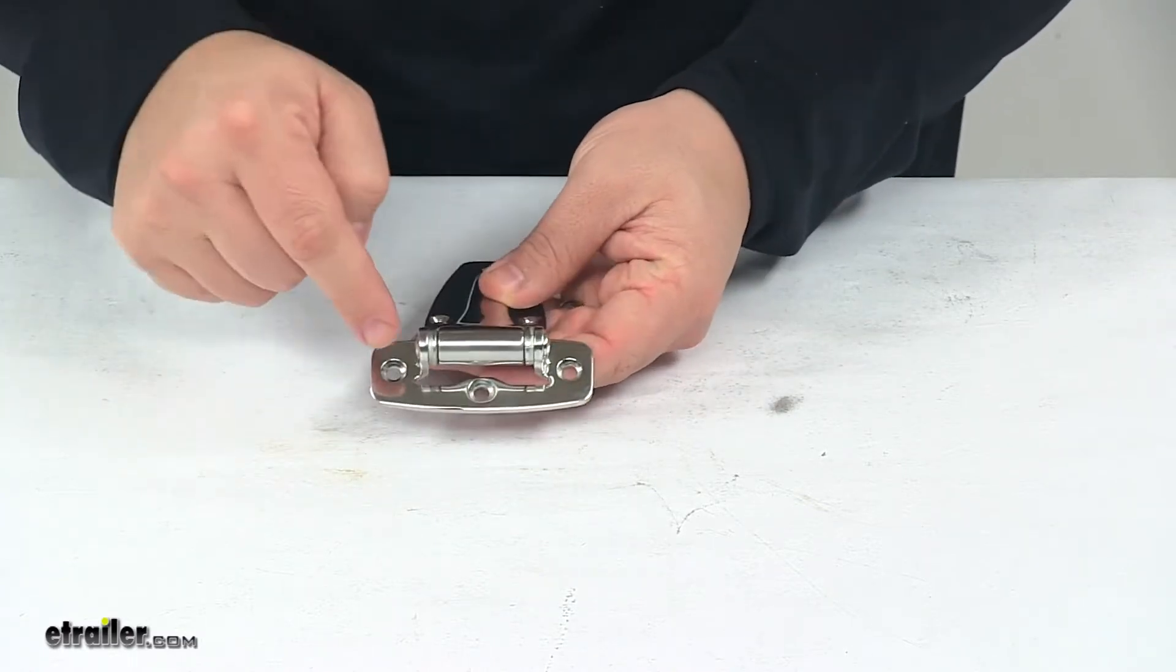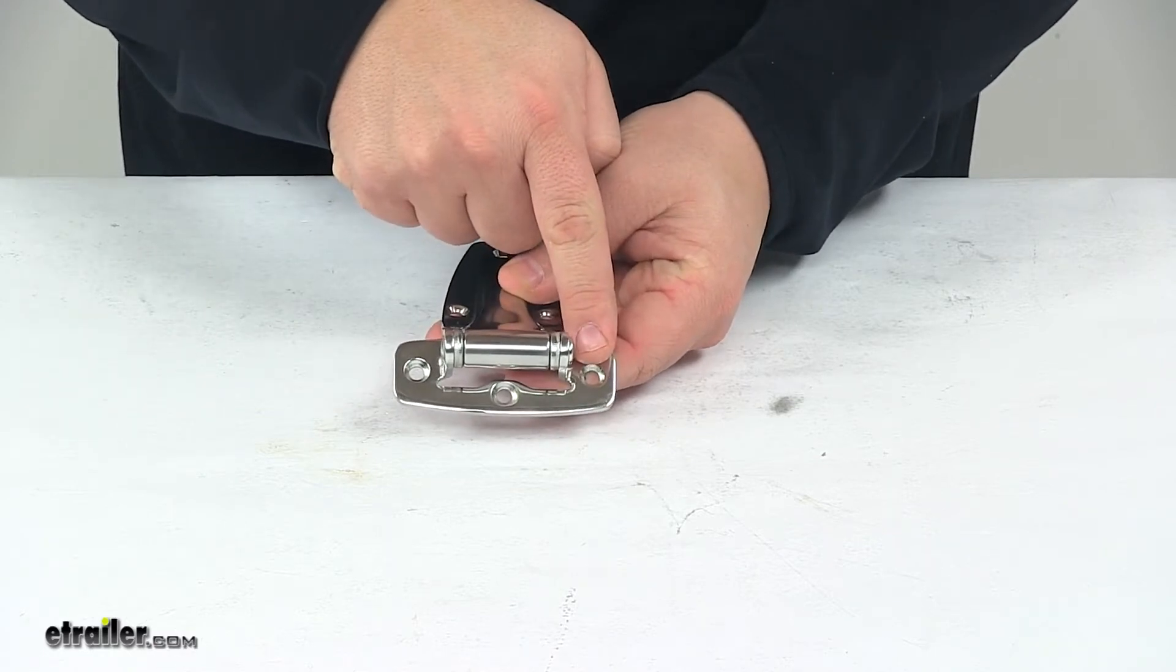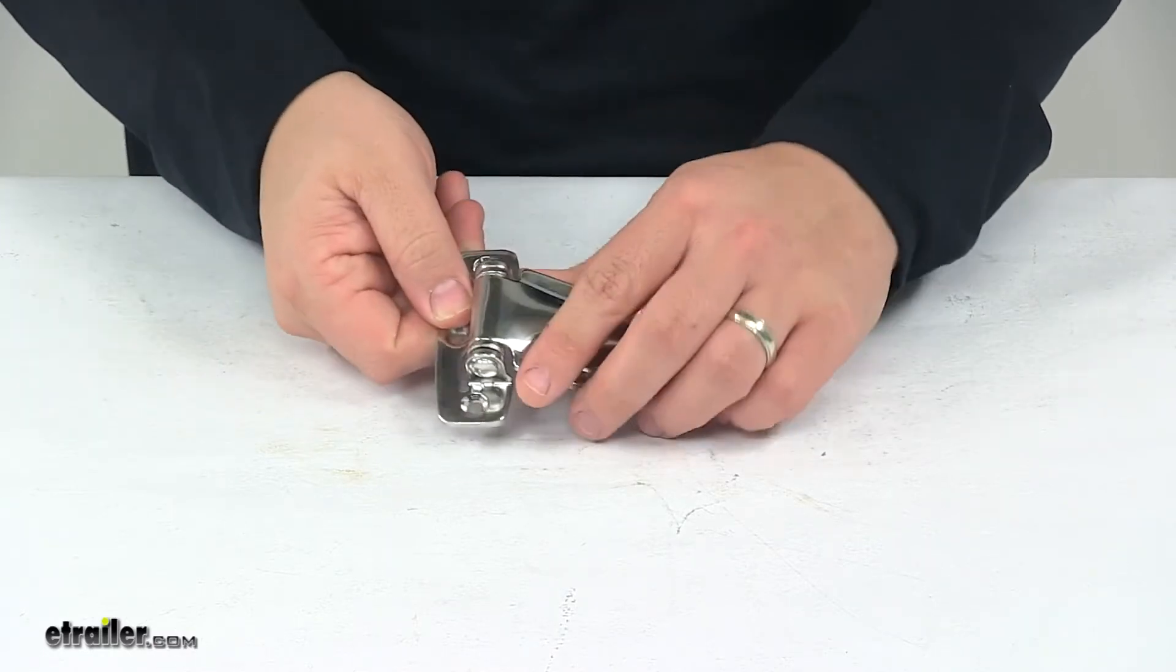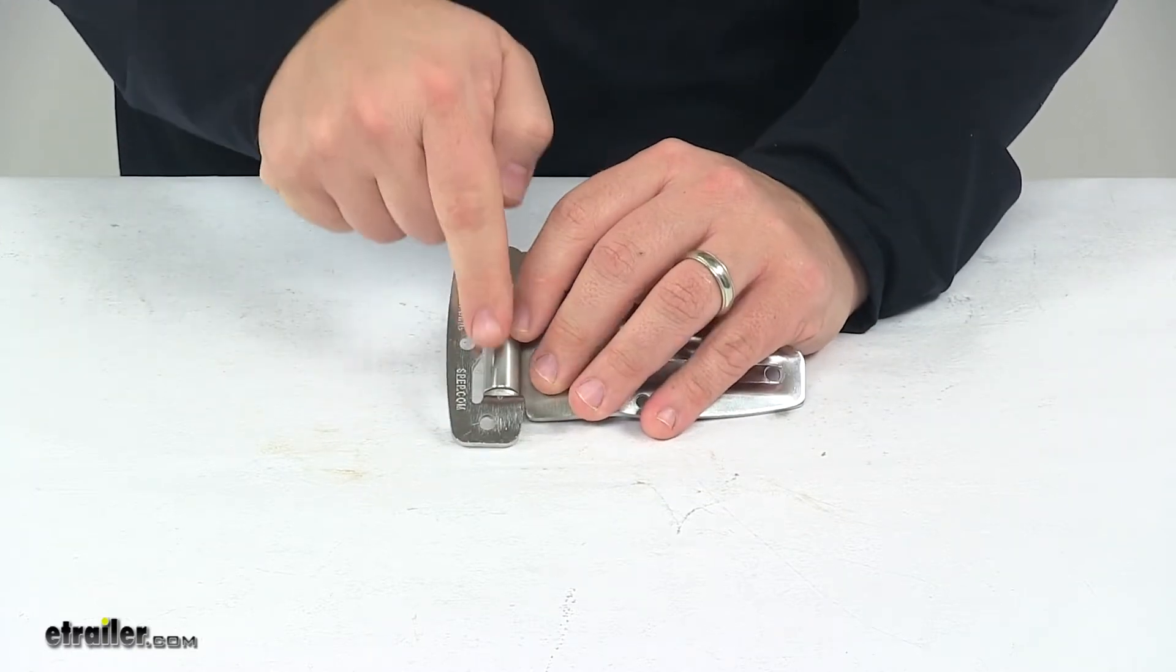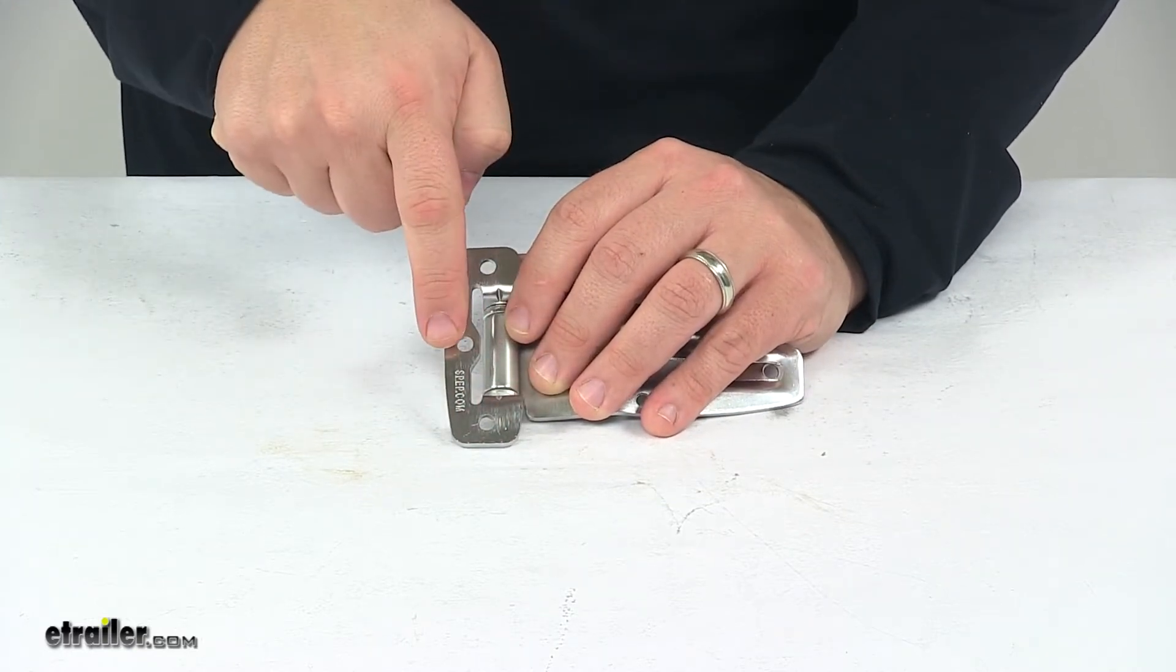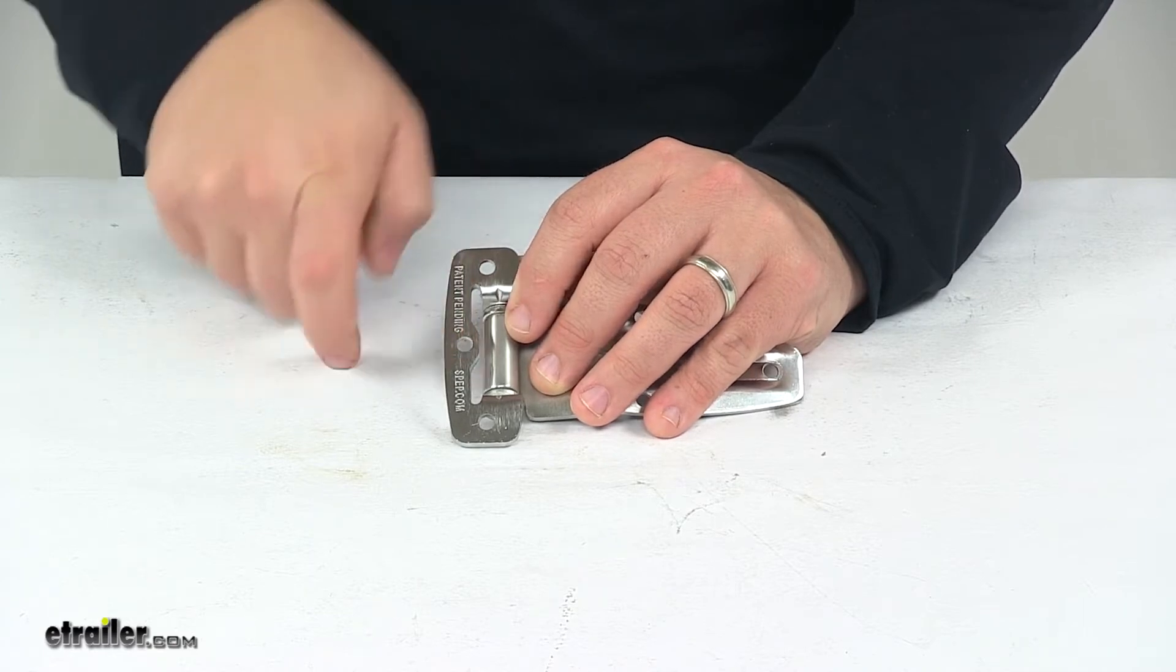The base holes, this one to this one, are separated on center by two and nine-sixteenths of an inch, and if you were to take a straight line between these two holes and measure straight out to this one, that would give you a measurement of about three-eighths of an inch.